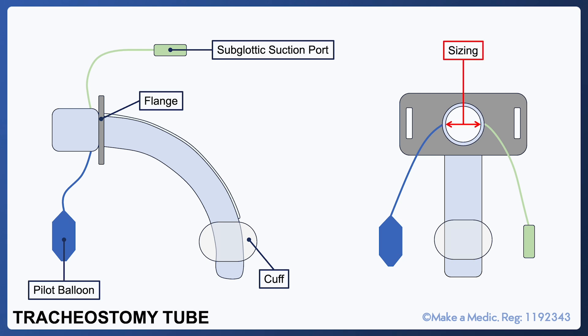Tracheostomy size, like endotracheal tubes, is usually described based on their internal diameter. Most tracheostomy tubes used in adult patients will range from 6 to 8 mm.